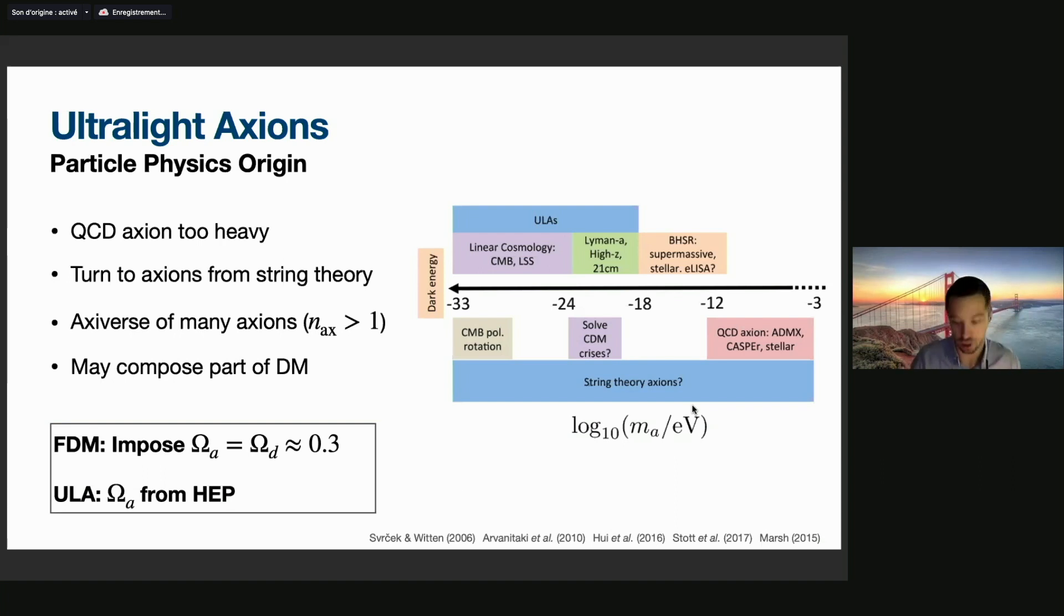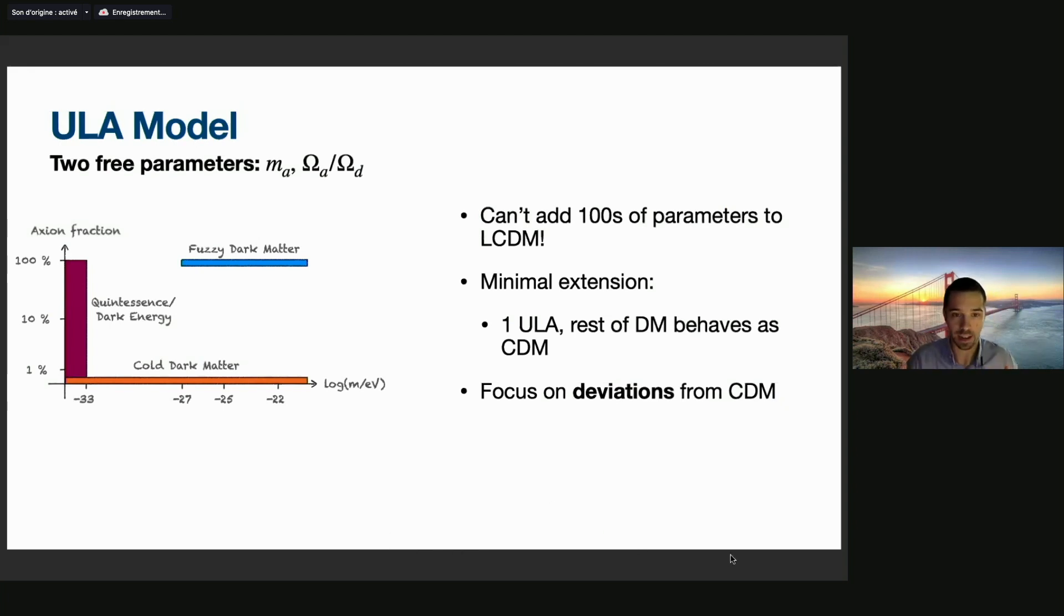But in this case, in the case of ultralight axions, we don't impose that the ultralight particles compose the totality of the dark matter. We calculate the relic density from high energy physics and then they can compose just a subcomponent. The model that we look at, instead of adding a ton of parameters to lambda CDM for all of the axion species, what we do is that we look for minimal deviations from lambda CDM. We start with lambda CDM and we add two parameters: the first one is the mass of the ultralight field or the ultralight axions, and the second parameter is the fraction of the dark matter composed of these ultralight axions.